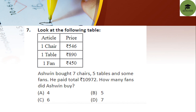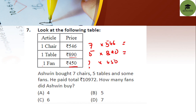Question 7: look at the following table. One chair costs ₹546, one table costs ₹890, one fan costs ₹450. Ashrin Bhatt bought 7 chairs, 5 tables, and some fans, and paid a total of ₹10,972. How many fans did he buy?